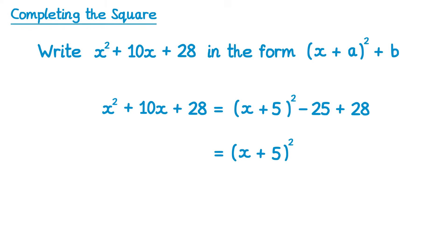All that's left to do now, is write the bracket down again, and then simplify the two terms here in pink. Negative 25 add 28 gives you 3, so this would be plus 3. If you now compare our answer here with the completed square form, you can see it matches. So a turns out to be 5, and b turns out to be 3.